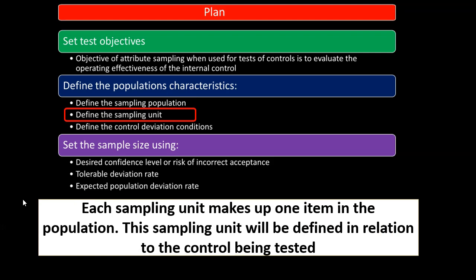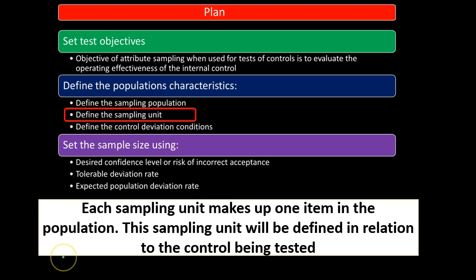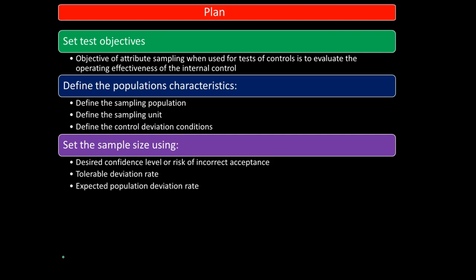The sampling unit is each individual item that makes up one item in the population. In this case, it would be one of the purchase order documents we're looking for that has the verification indication on it. The sampling unit is defined in relation to the control being tested — we're testing these units to see if they comply with what we're looking for, such as initials that would indicate the verification.